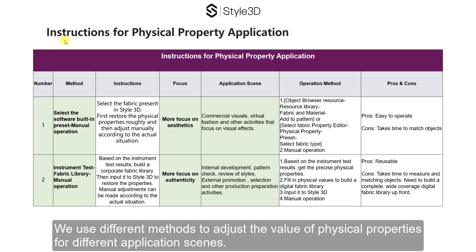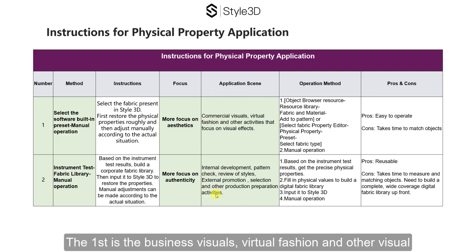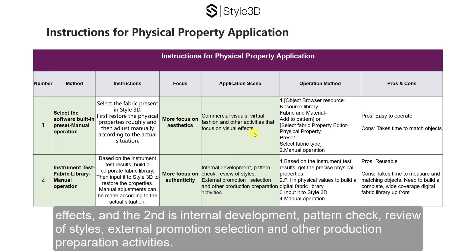We use different methods to adjust the value of physical properties for different application scenes. Generally speaking, our application scene is divided into two kinds of activities: the first is business visuals, virtual fashion, and other visual effects; and the second is internal development, pattern check, review of styles, external promotion, selection, and other production preparation activities.